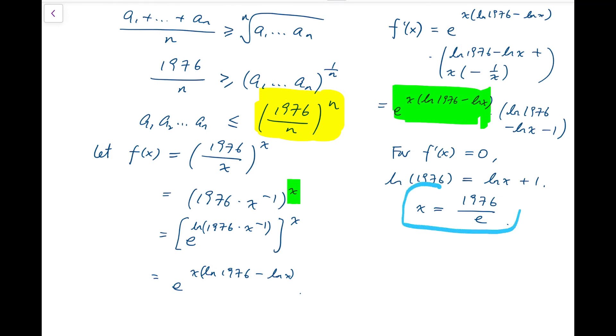The question is what does this maximum actually imply? It means that we have to split 1976 into 1976 over e numbers so that we can obtain the maximum for the product. If we split it into this number of numbers then each number would be equal to 1976 divided by this x, that means each number should take value e. We know that this conclusion is absurd because we are talking about splitting into positive integers, but this result gives us a very useful intuition: we should choose the numbers that is the closest to e.